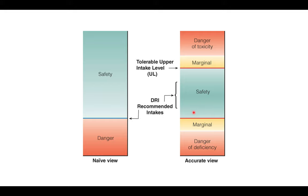The next component is the Acceptable Macronutrient Distribution Ranges, and this is a slide you will certainly want to remember for exam 1 and moving forward for the rest of the semester. These are the healthful ranges of intake for carbohydrate, fat, and protein. When we look at total calories, we recommend 45% to 65% from carbohydrates, 20% to 35% from fat, and 10% to 35% from protein. Once we dive into each of the macronutrients, you'll get a better understanding of what this means.